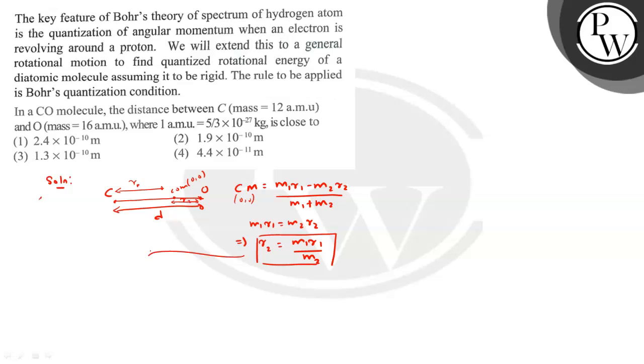So, r2 = d - r1 = m1·r1/m2, which gives us d equals (1 + m1/m2) times r1.